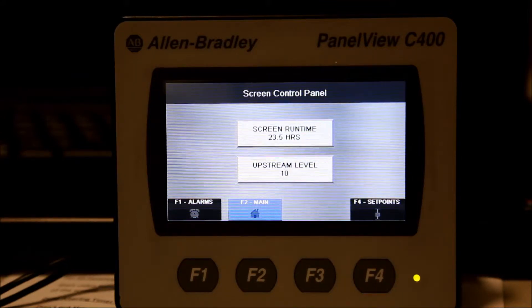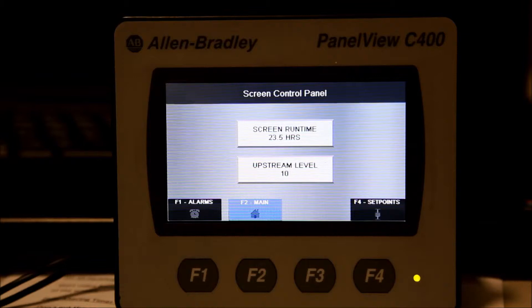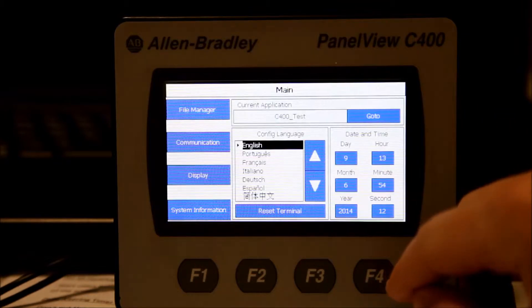If you start in an application, you can get to the configuration menu by touching the hidden button in the top right corner of the application screen.